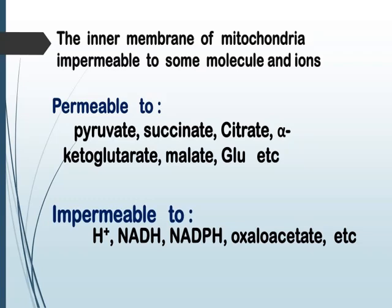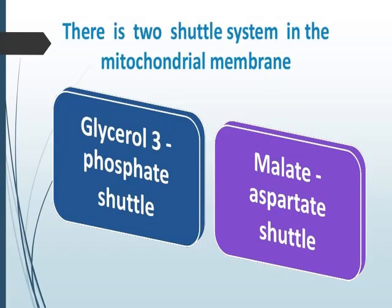This creates a problem because during glycolysis, the Krebs cycle, and other processes, we generate large amounts of NADH and oxaloacetate. These materials need to enter the mitochondria to be utilized and to produce ATPs. For this reason, nature has provided shuttle systems which allow these materials to bypass the membrane and enter the mitochondria. We have two shuttle systems: the glycerol-3-phosphate shuttle and the malate-aspartate shuttle.